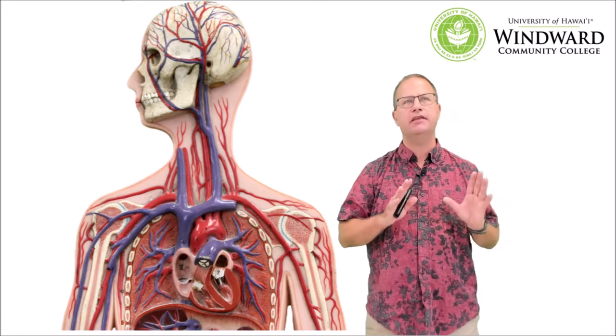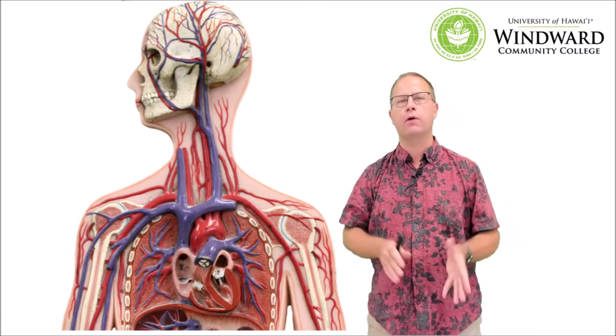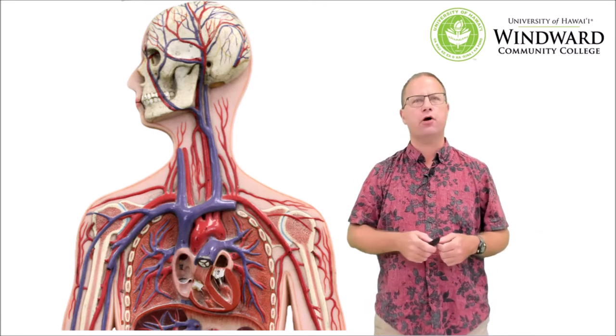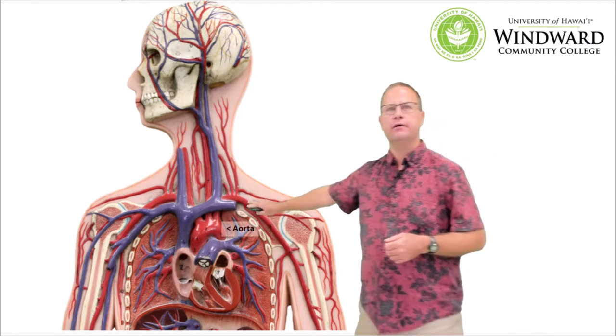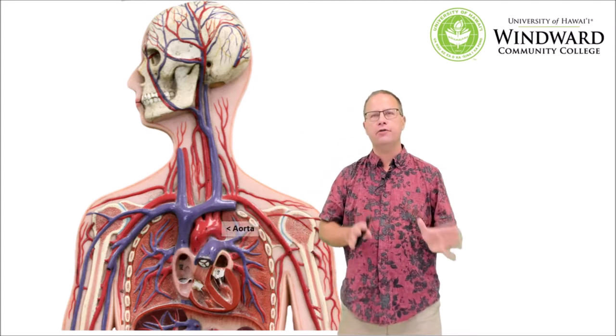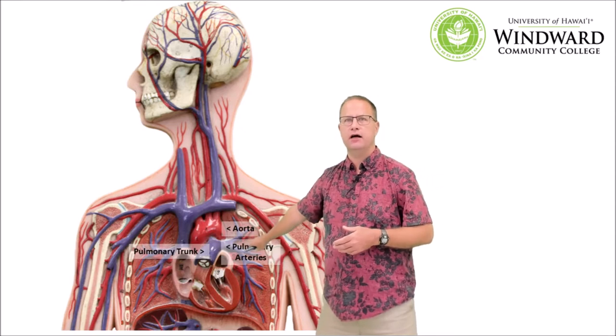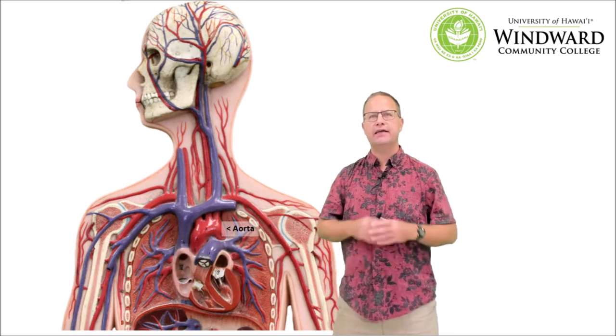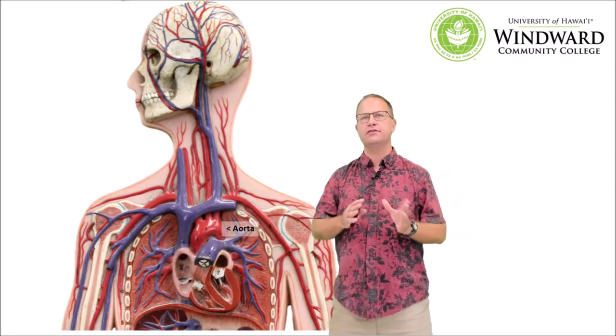We're going to start by learning the arteries in the head and thorax. The major artery leaving the heart is the aorta, which has an ascending part going up, an arch that travels across, and a descending part going down. Two other arteries in the heart are the pulmonary trunk, leaving the right ventricle and going toward the lungs, branching into the pulmonary arteries which take oxygen-poor blood to the lungs. Now let's take a look at the aorta and the three vessels it gives rise to.